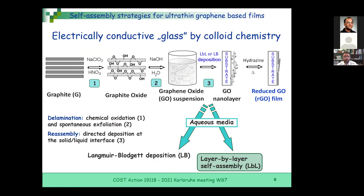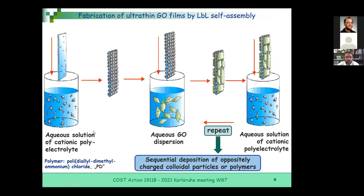This will be a little bit related to the next talk by Professor Dalton. We could use Langmuir-Blodgett deposition — I don't have time to talk about this — but we also have the layer-by-layer self-assembly technique, which is quite simple. We need to have a charged substrate. Here we use quartz, and the quartz can be decorated by a cationic polyelectrolyte, a polymer molecule which sticks on the surface.